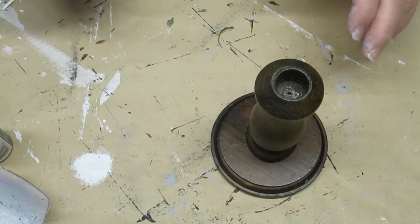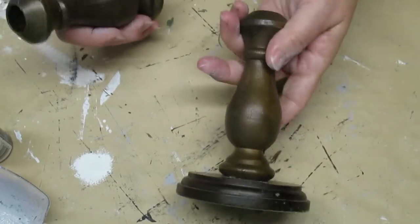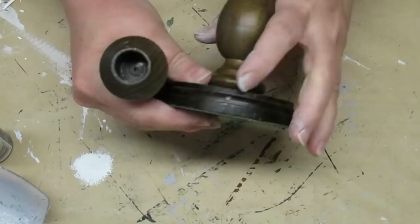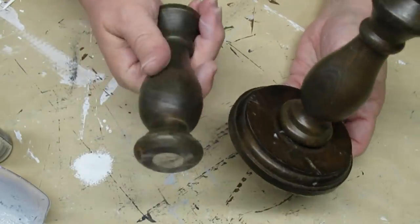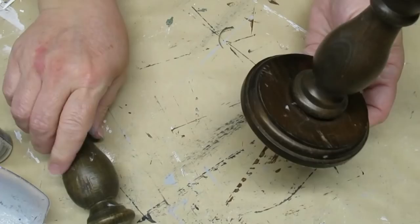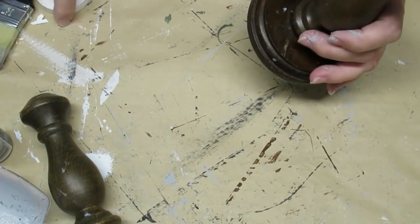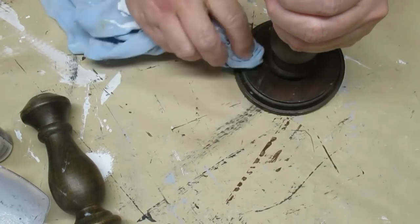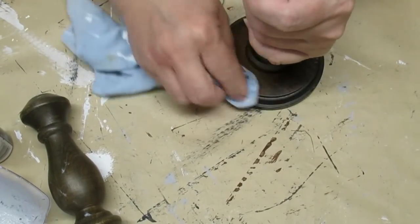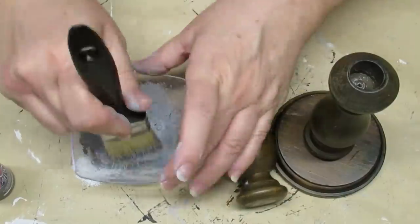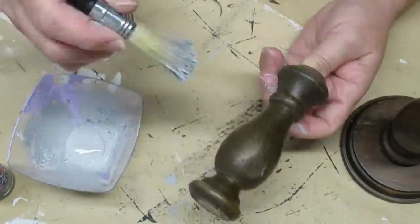I grabbed these two candlesticks from a thrift store and they've been in my stash for a while waiting for this tiered project to get itself together. I'm finally doing it thanks to Nicole for her get it done challenge. I just cut off the base of one of them because I won't need that. The next thing I'm going to do is just clean them up and then dry brush some paint on them.